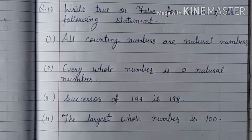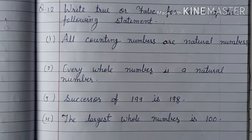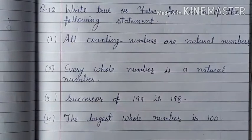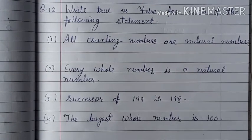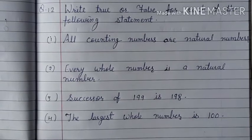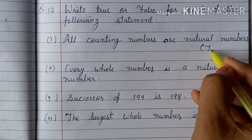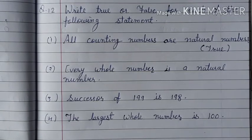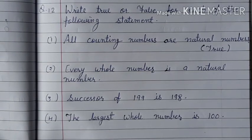Question 12 is write true or false for each of the following statement. First statement is all counting numbers are natural numbers. So it is true. Because counting numbers start from 1, 2, 3 and go to infinity, and they are all natural numbers.